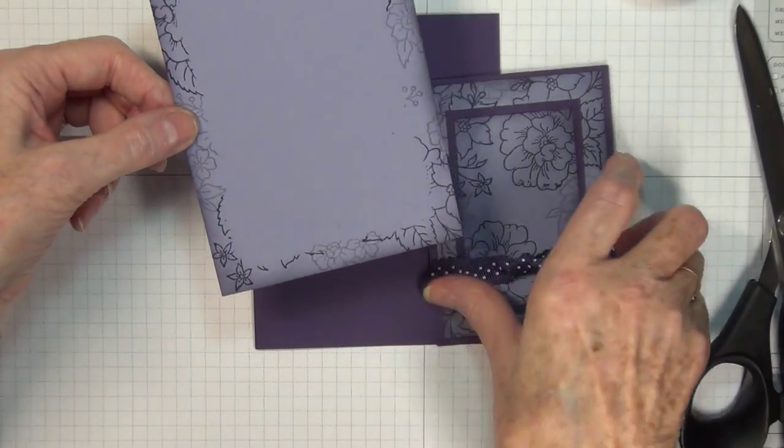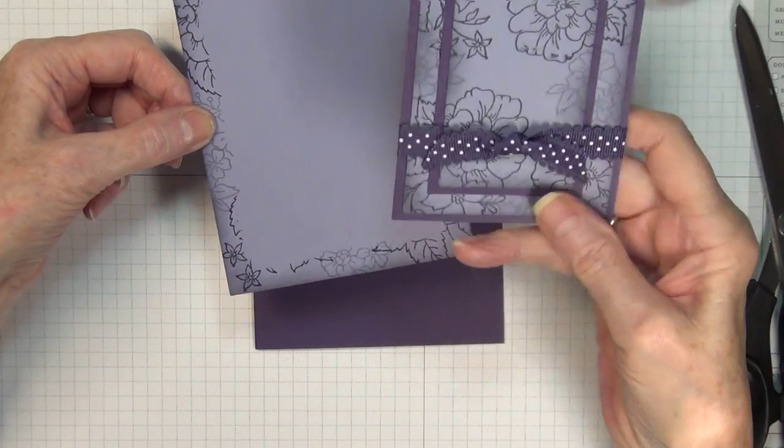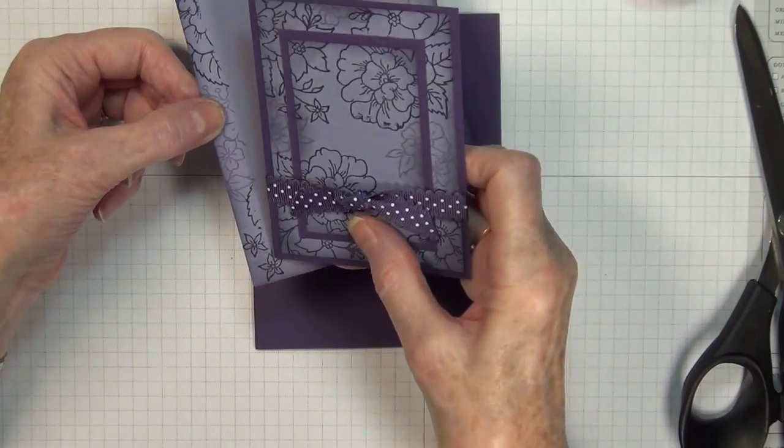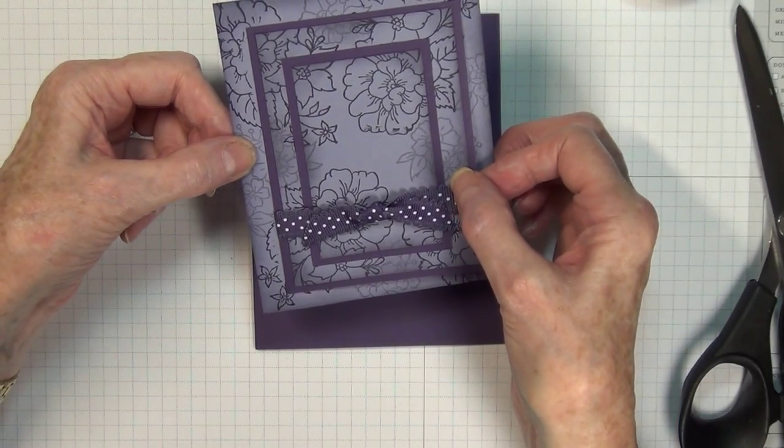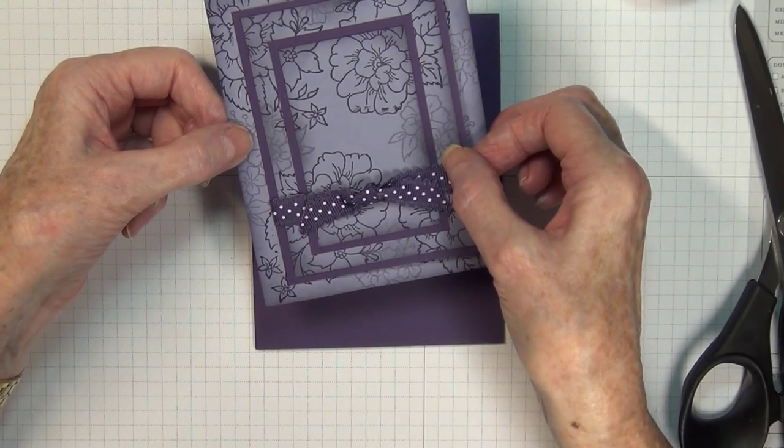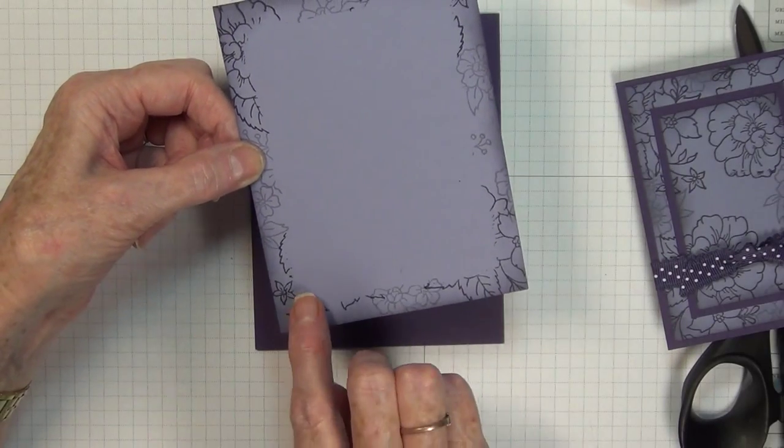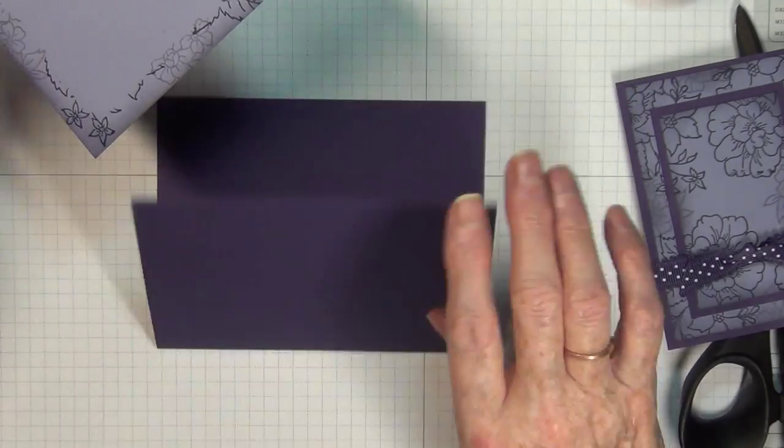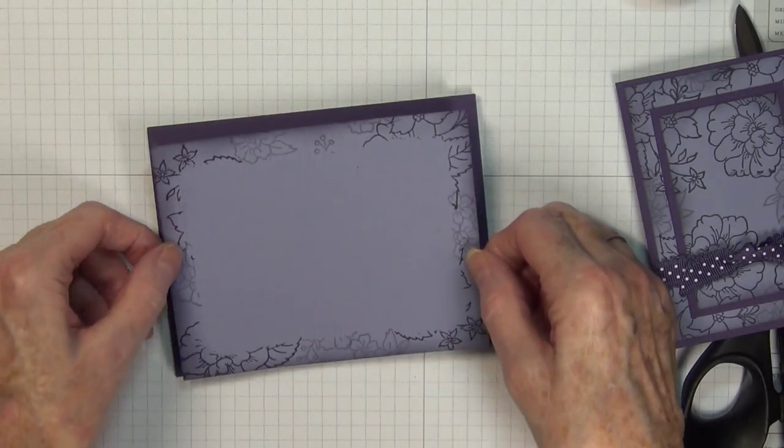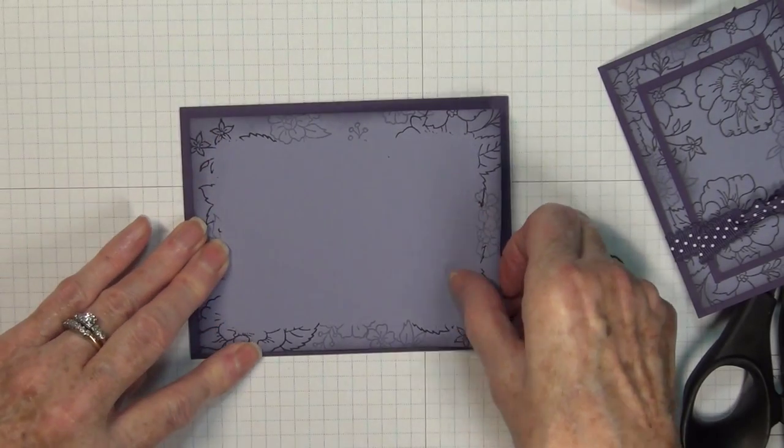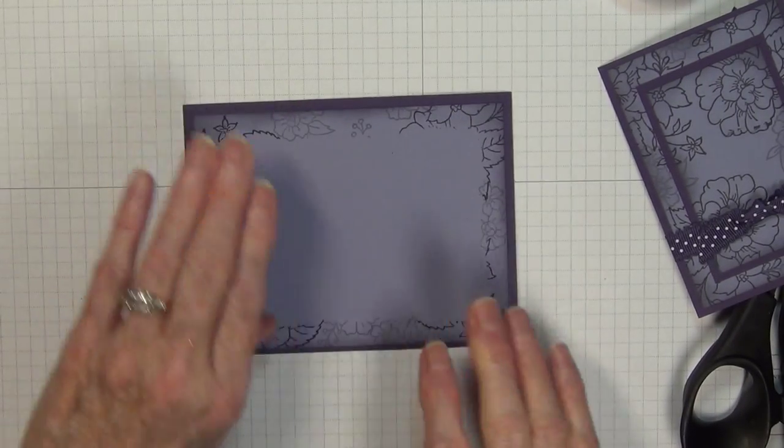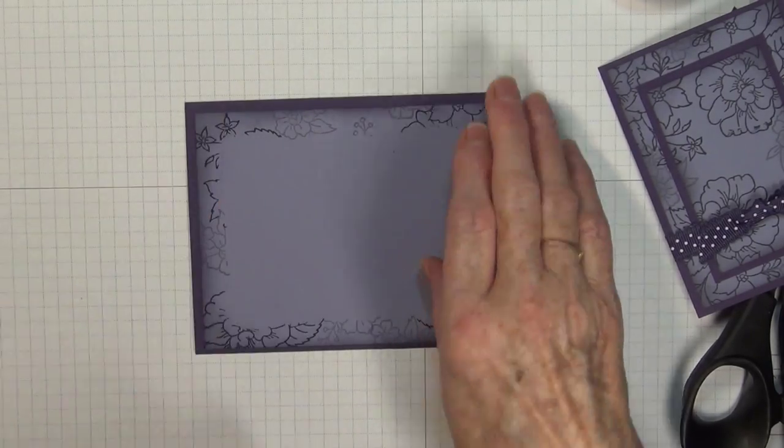Now this is my largest Wisteria Wonder panel, and I just wanted to show you before I adhere it onto the card how important it is that you make sure that these are all lining up. Because if you had that turned upside down, it's not going to work for you. I'm double checking. I've made that mistake too many times where I've glued a panel on and not had the card going in the right direction. You girls don't do that, do you?